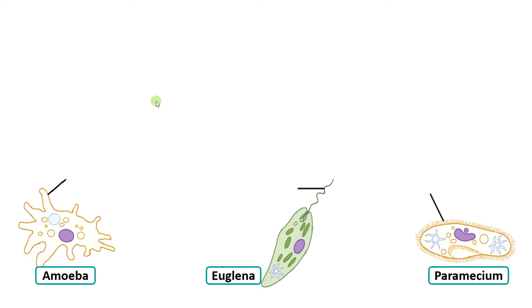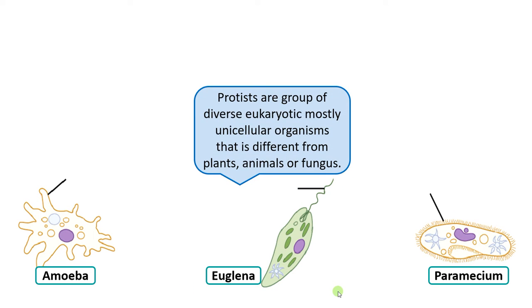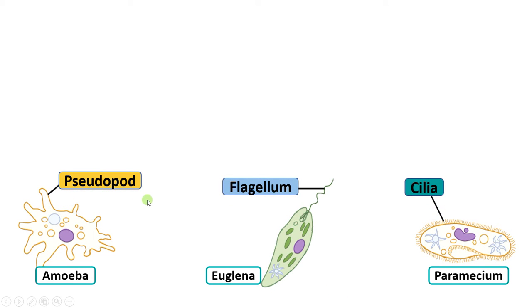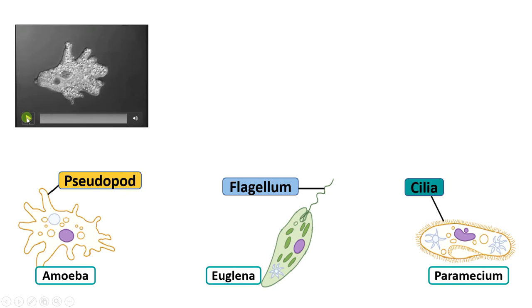Hi friends, hope you are fine. Today let us have a very short video on cell surface appendages in protists. As you see — amoeba, euglena, paramecium — protists are a diverse group of eukaryotic organisms, mostly unicellular, that is distinctively different from plants, animals, and fungi. Cell surface appendages include pseudopodia, flagellum, and cilia.